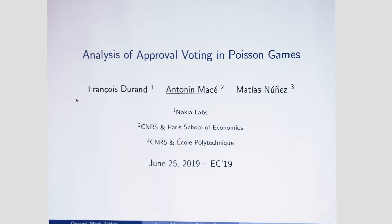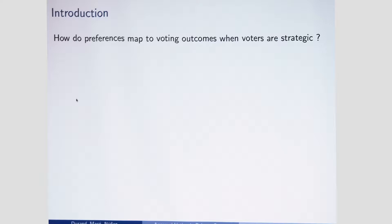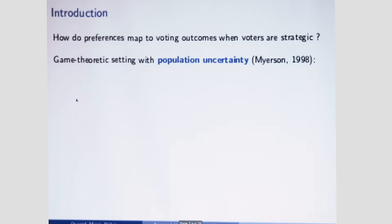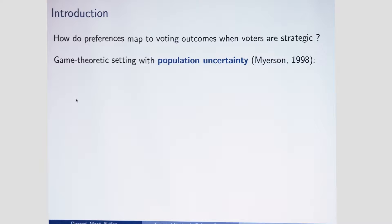We are interested generally in the following question: how do preferences map to voting outcomes when voters are strategic? We know that game theory is not always very useful to answer this question because there are too many equilibria. A useful tool is the game-theoretic setting introduced by Myerson, in which you have population uncertainty — some noise — and this reduces the number of equilibria.